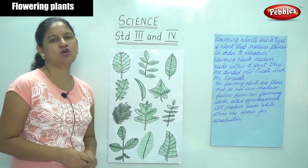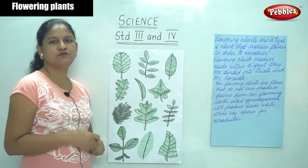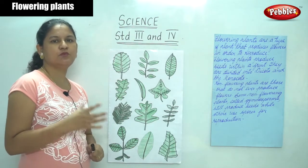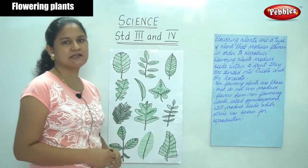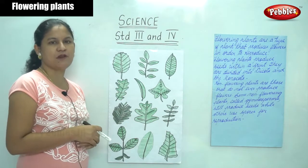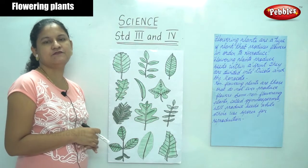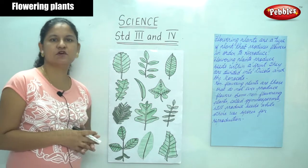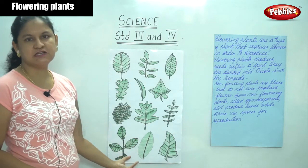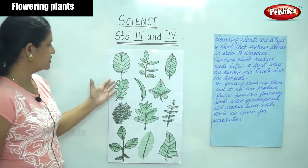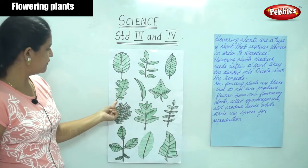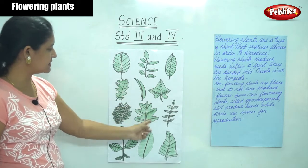Leaves are called the kitchen or the food factory of the plant because it prepares its own food with the presence of chlorophyll and sunlight. Each tree or plant is unique and they have different leaves of different shapes and sizes. We have some common shapes and structures of a leaf, and the midrib or midvein is the same across many types.